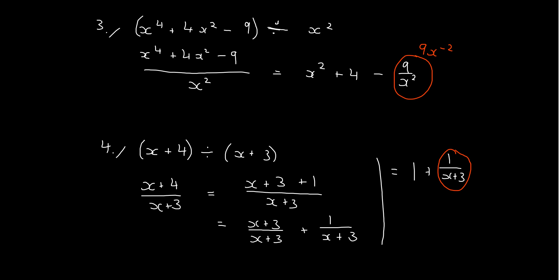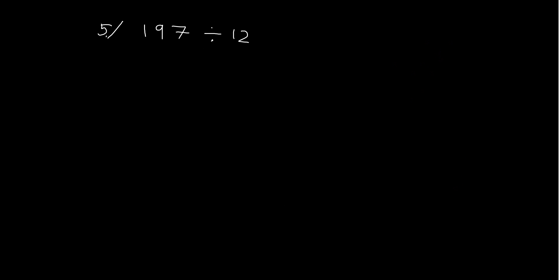Now these ones were pretty easy to divide, but let's try dividing a couple of harder ones. Before we do that, let's actually have a look at dividing some integers. So we've got 197 divided by 12. I know you can very easily do this by plugging it into your calculator. However, let's actually look at long division. This is a method that you learned in primary school, or last year if you paid attention. So we're going to divide 12s into 197.